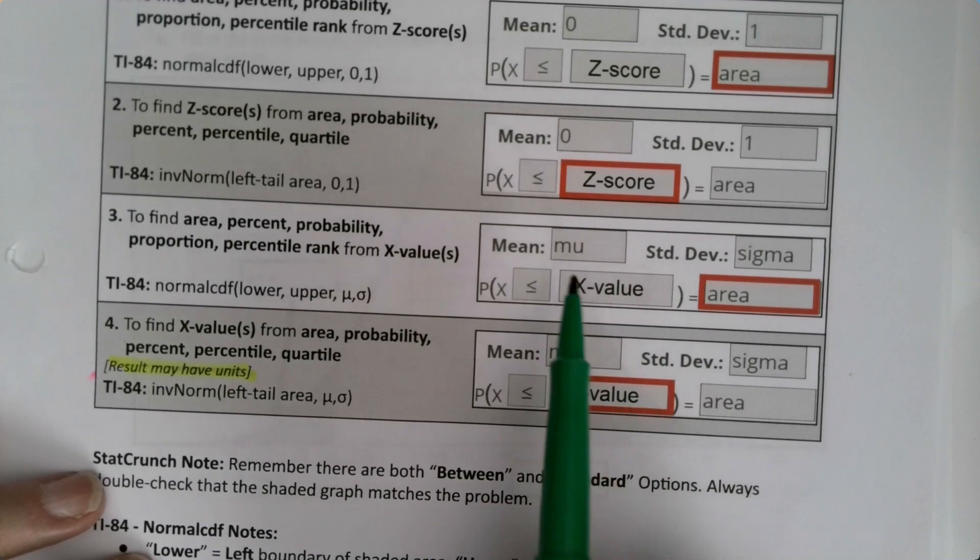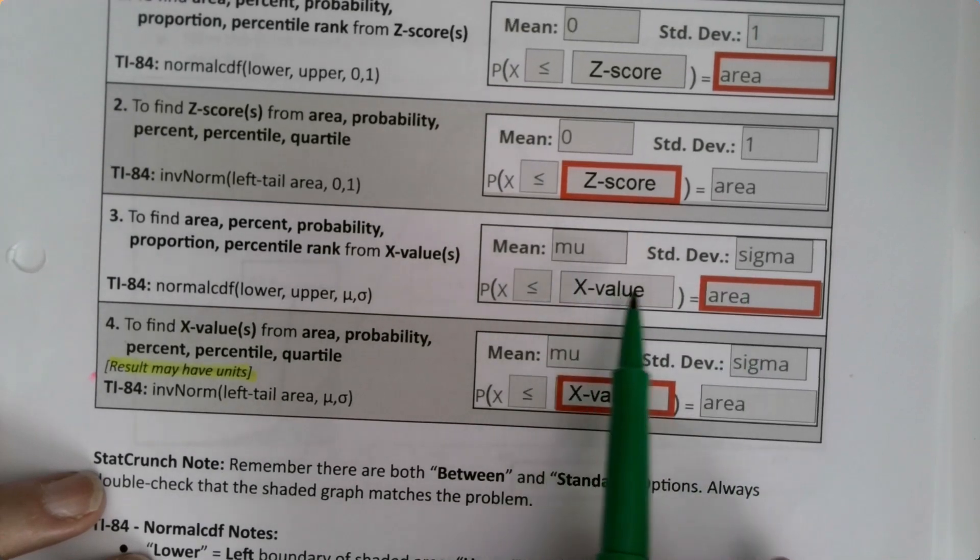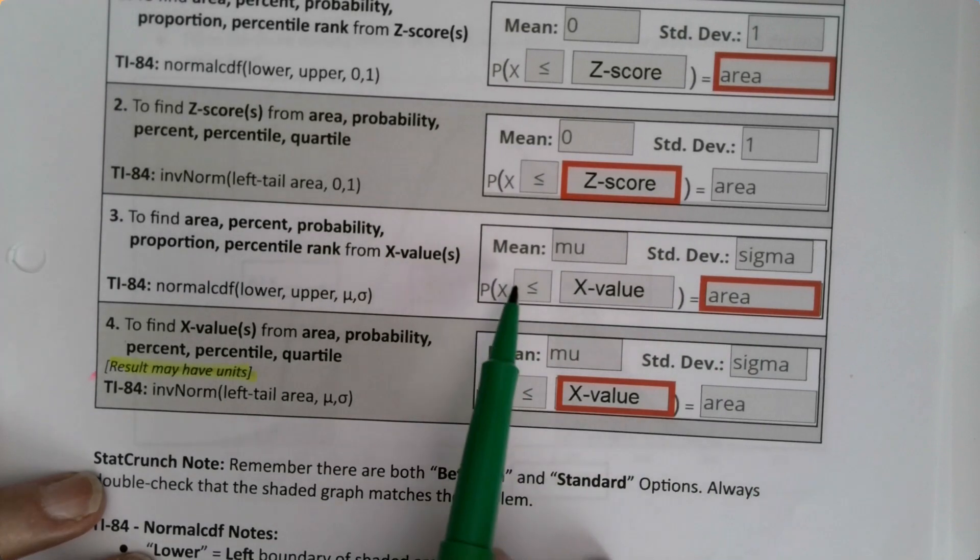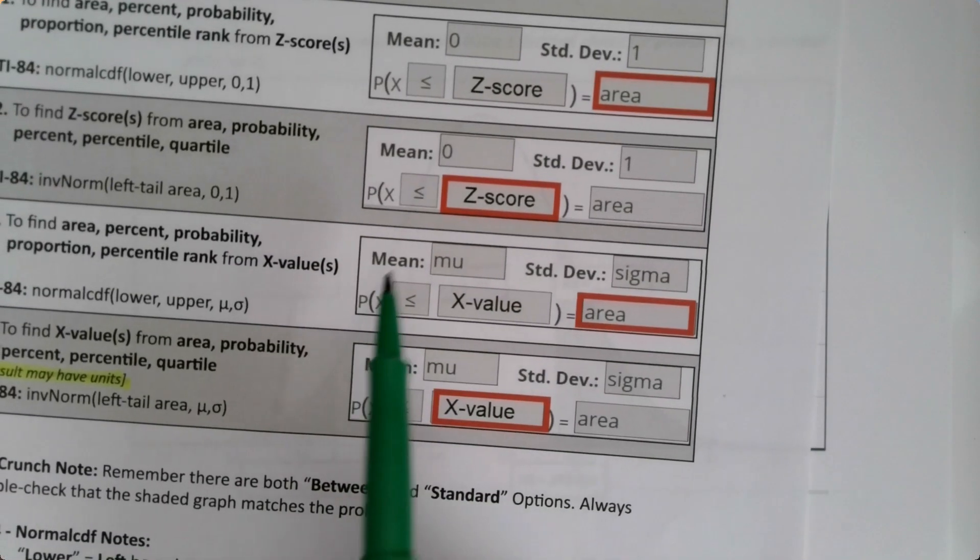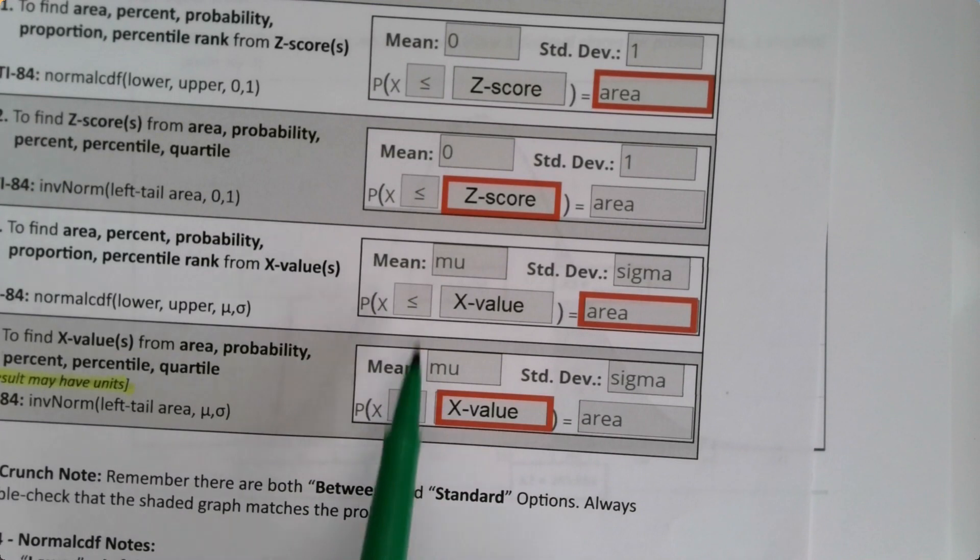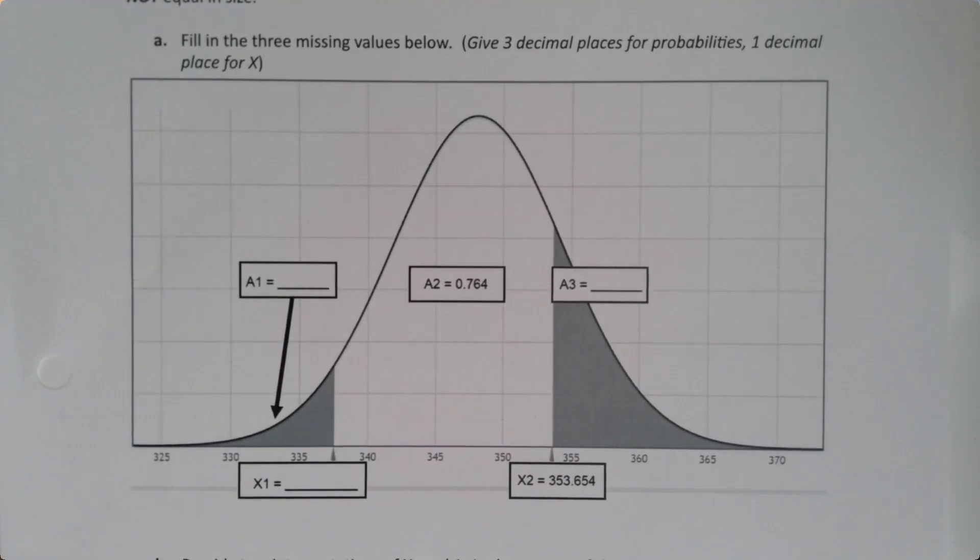I'm going to put the mean and standard deviation in and then I'll put the x value in and it will give me the area. Now the thing is the direction arrow, the symbol less than or greater than, will have to change because I'm actually talking about a right area here, not a left. You just have to change your symbols based on the problem that you're working on.